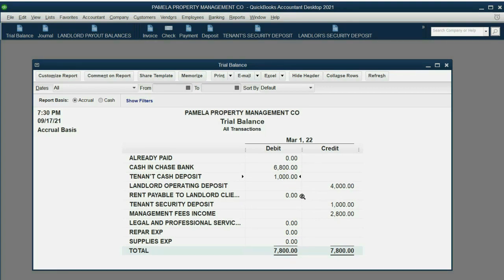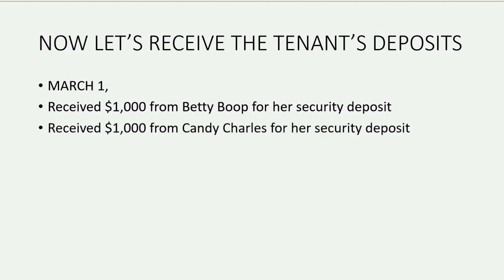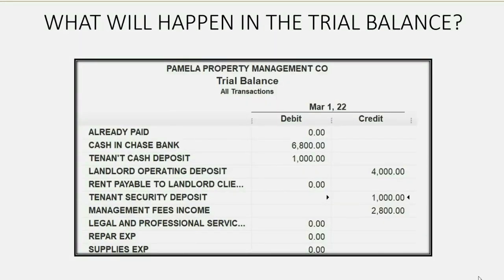This is the trust account; this is the liability account that represents what we owe. Also on March 1, we received $1,000 from Candy for her security deposit. The Tenant's Security Deposit will increase to $2,000 from $1,000 because this bank account will physically have $1,000 more, and the liability — what we owe back to tenants if they move out — will also increase by $1,000.